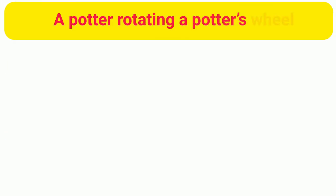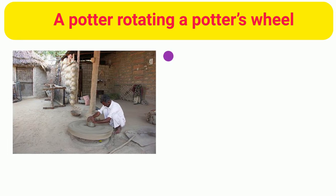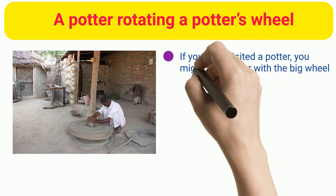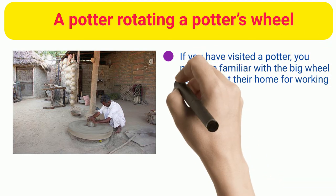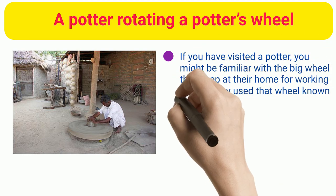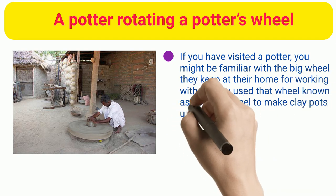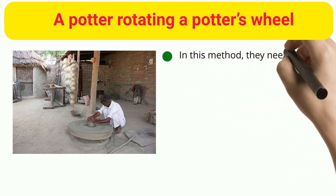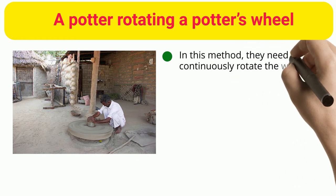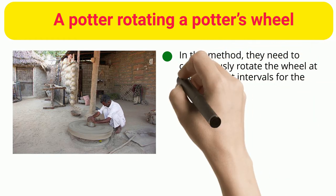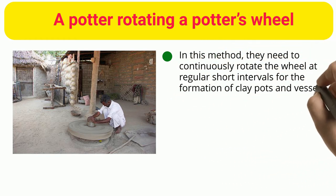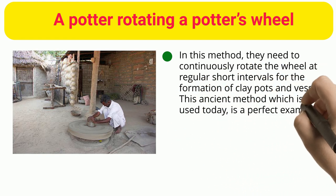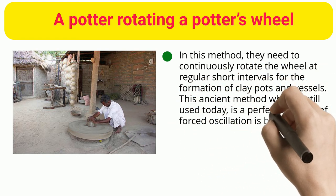A potter rotating a potter's wheel. If you have visited a potter, you might be familiar with the big wheel they keep at their home for working with it. They use that wheel, known as a potter's wheel, to make clay pots using the potter wheel throwing method. In this method, they need to continuously rotate the wheel at regular short intervals for the formation of clay pots and vessels. This ancient method, which is still used today, is a perfect example of forced oscillation being persistently used since the past.